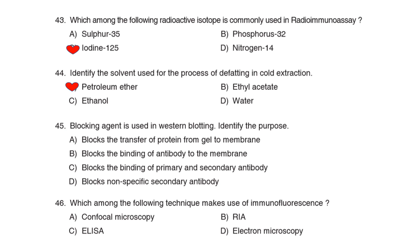45th Question: Blocking agent is used in western blotting — identify its purpose. Correct Answer: Option B: To block the binding of antibody to the membrane. Which among the following techniques makes use of immunofluorescence? Correct Answer: Confocal Microscopy.